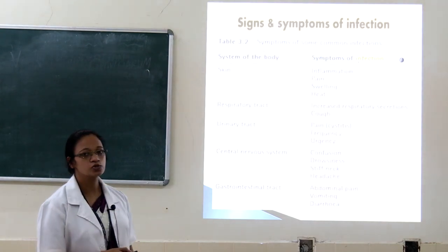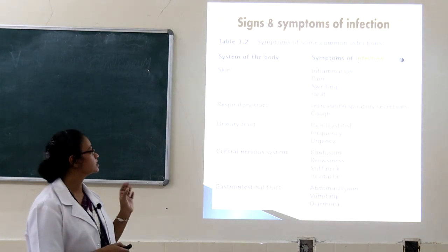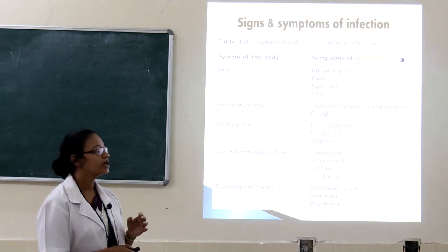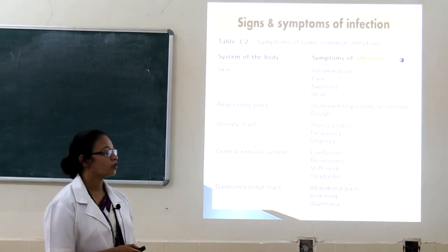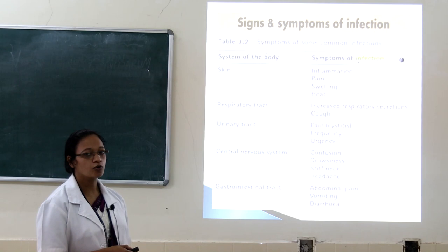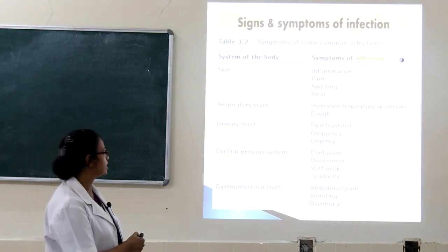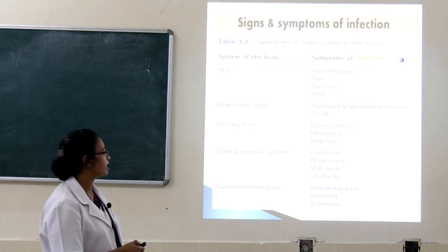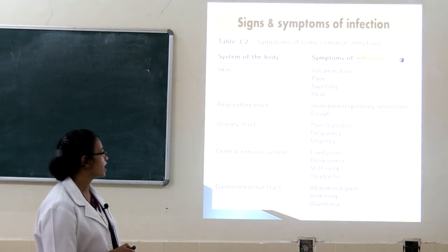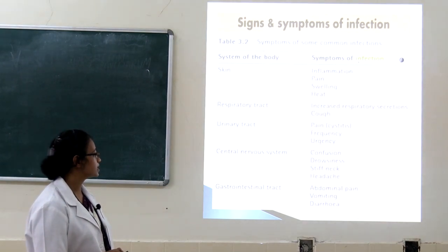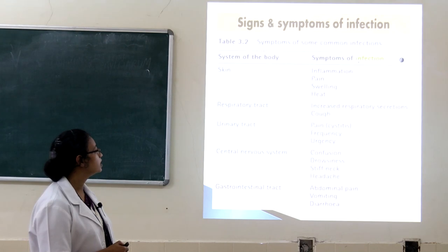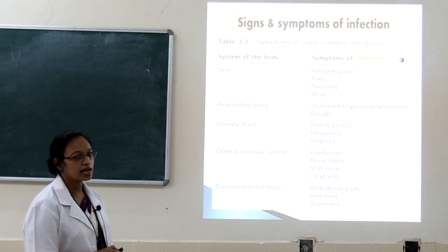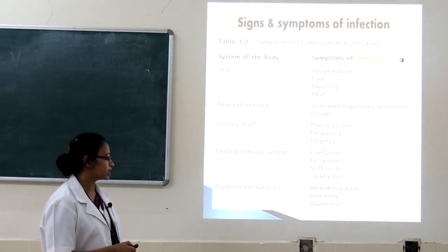Signs and symptoms of infection vary by body system. In the skin: inflammation, pain, swelling, and heat. In the respiratory tract: increased respiratory secretions and cough. In the urinary tract: pain, frequency, and urgency. In the central nervous system: confusion, drowsiness, stiff neck, and headache. In the gastrointestinal tract: abdominal pain, vomiting, and diarrhea.